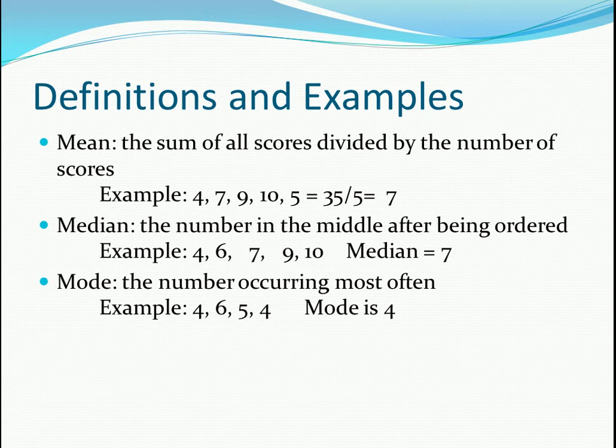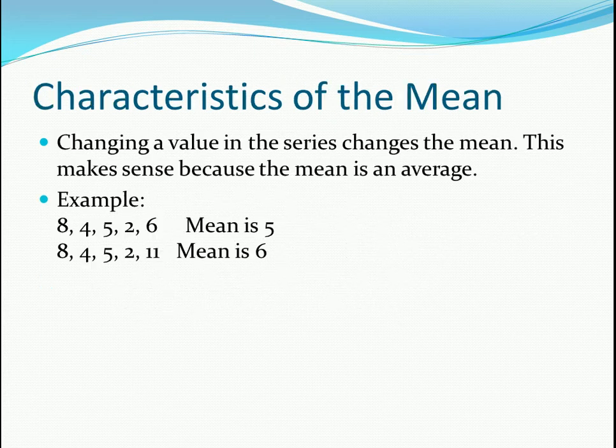The mode is the number that occurs the most often — I think that one's the easiest. So for this example of four numbers, you have the number 4 occurring twice, so your mode is 4.